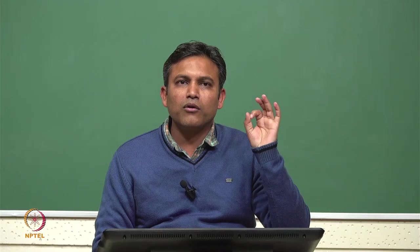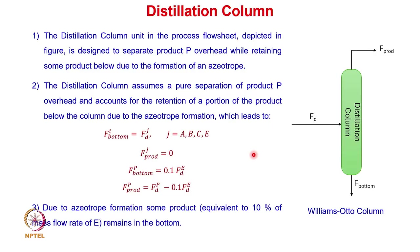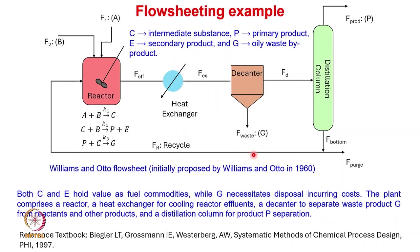If we assume the concentrations of different components in the recycle stream, we can solve the mass and energy balance for the reactor and obtain effluent values. Those effluent values — mass flow rates, mass fractions, and temperature — are then given as input to the heat exchanger. The heat exchanger removes a specific amount of heat, changing the temperature while mass flow rates remain the same.